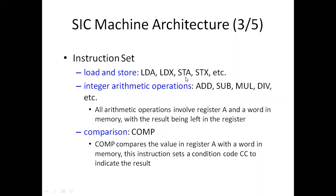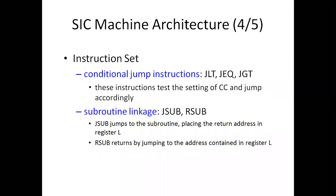Instructions include LDA, LDX, STA, STX. Integer arithmetic operations are ADD, SUB, MUL, and DIV. There is also a comparison operator: when we compare register A or X, the value is compared with the register A content. Conditional jump instructions include JLT, JEQ, and JGT — jump less than, jump equal to, and jump greater than.